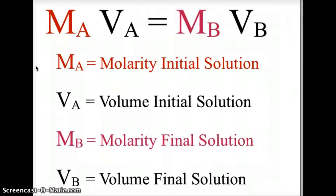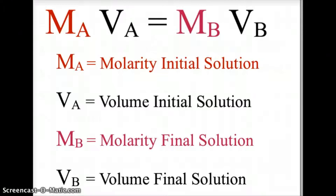Later, when we talk about acids and bases, MA will be the molarity of the acid, VA will be the volume of the acid, MB will be the molarity of the base, and VB will be the volume of the base. But that will come with titrations when we talk about acid and base titrations.